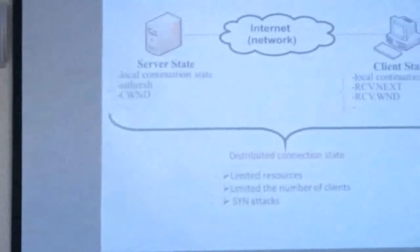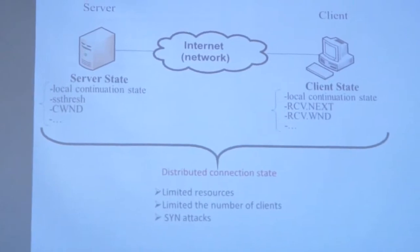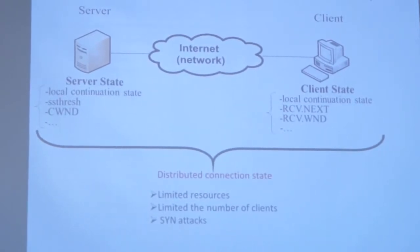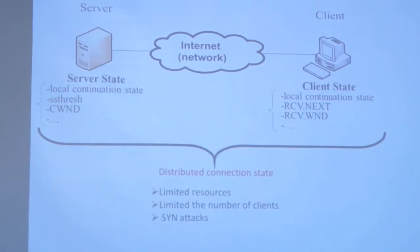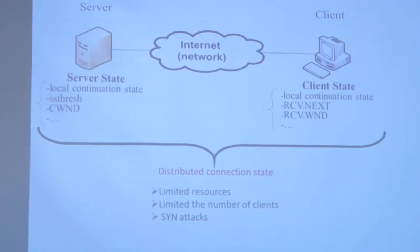The most commonly used reliable transfer protocol in modern networks is the Transmission Control Protocol, which is quite old and has undergone lots of small modifications. The main idea is that it has to maintain a distributed connection state between the server and the client, which means the reservation of certain data structures at both ends of the connection, allowing the system to rely on transportation with a controlled rate of data transfer that matches the current network situation.